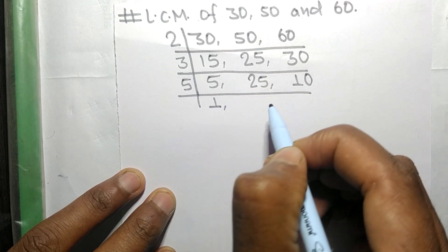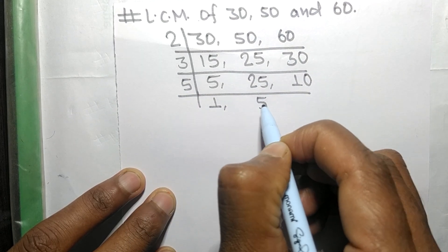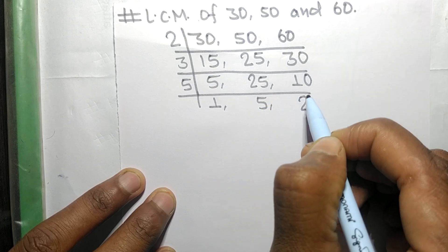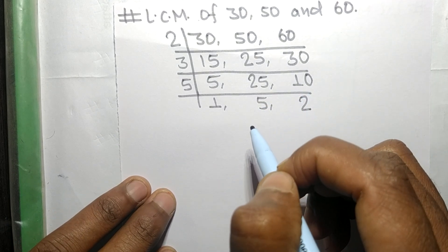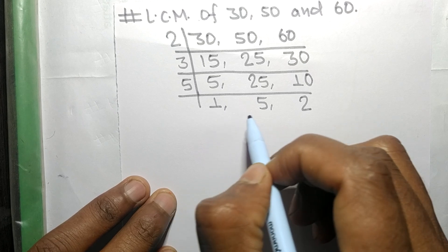So now the numbers 1, 5, and 2 are not exactly divisible by same number.